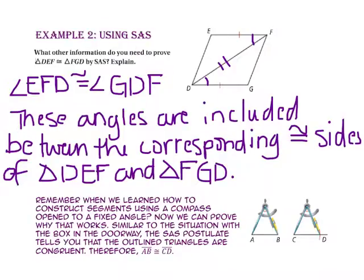Remember when we learned how to construct segments using a compass open to a fixed angle? Now we can prove why that works. Similar to the situation with the box in the doorway, the side-angle-side postulate tells you that the outline triangles are congruent, and therefore side AB is congruent to side CD.